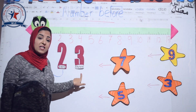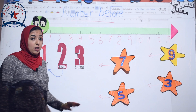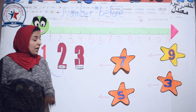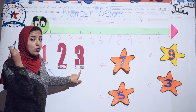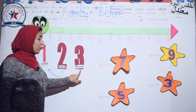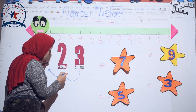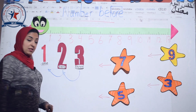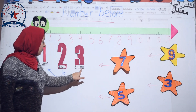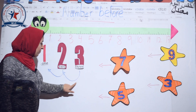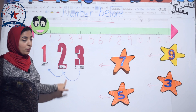And now, what is this number? Three. What is the number that comes before number three? Let's see. Yes, number two. So before number three, number two.